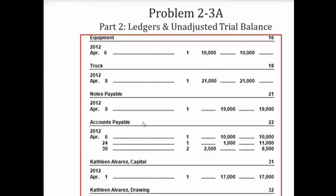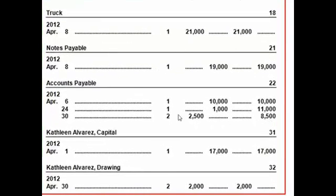Accounts payable is also a liability and has a normal credit balance. So every time we journalized for accounts payable, we record it here and keep a running balance of this particular account. At the end of April, accounts payable had a balance of $8,500.